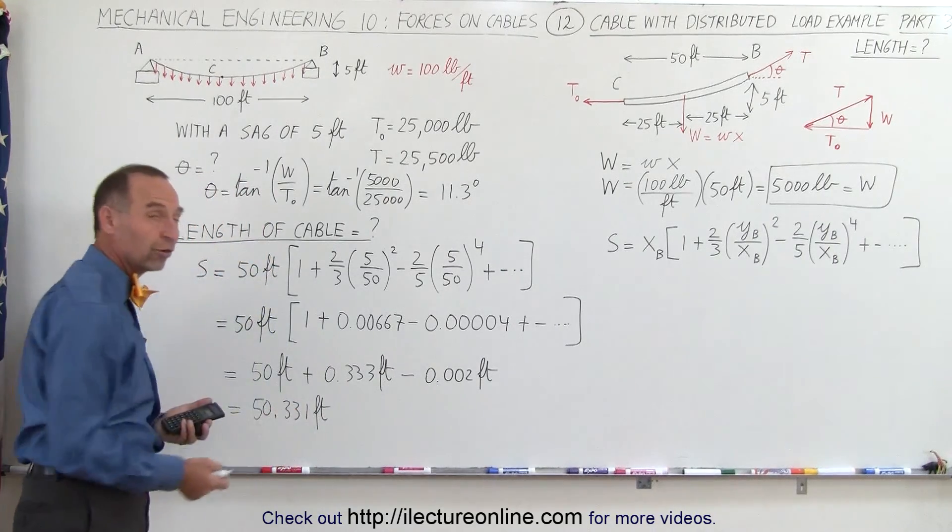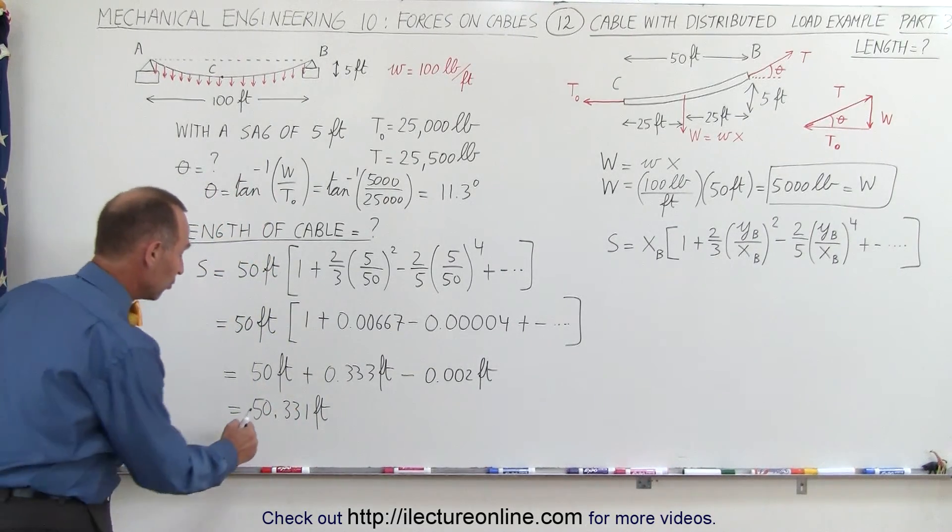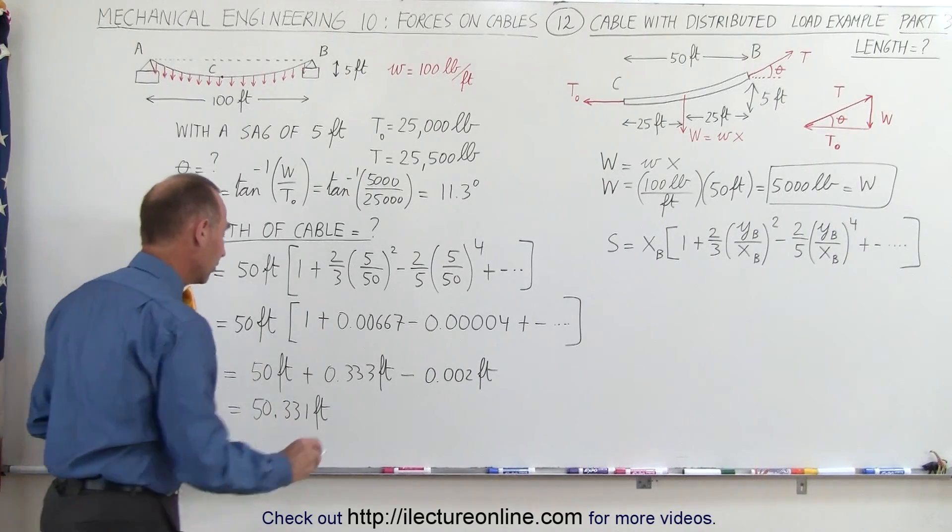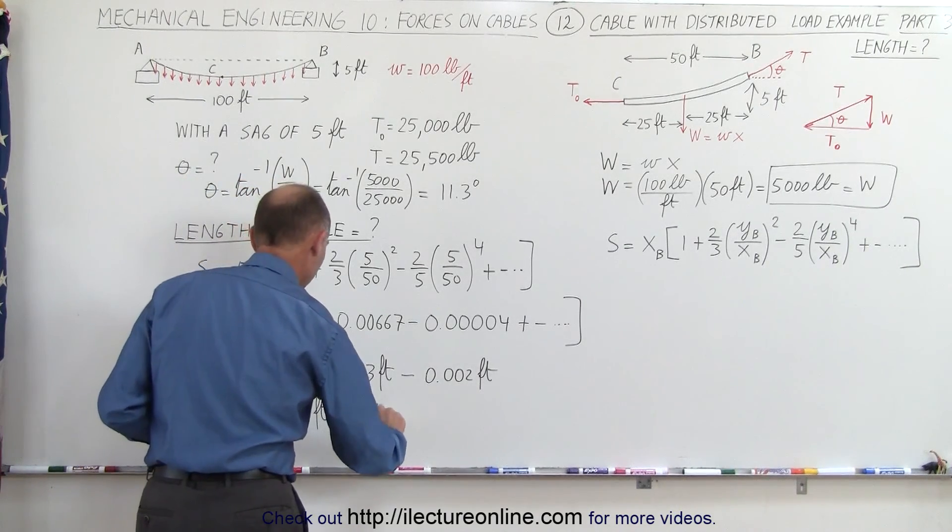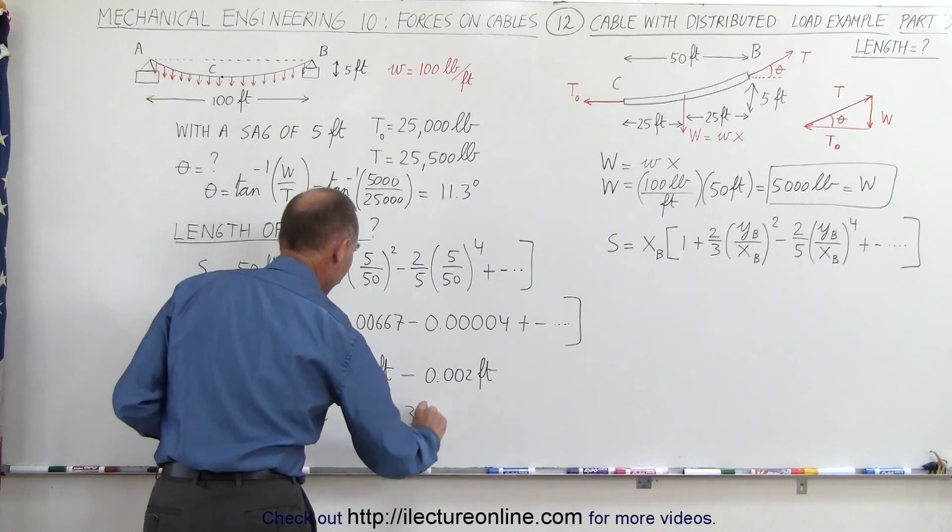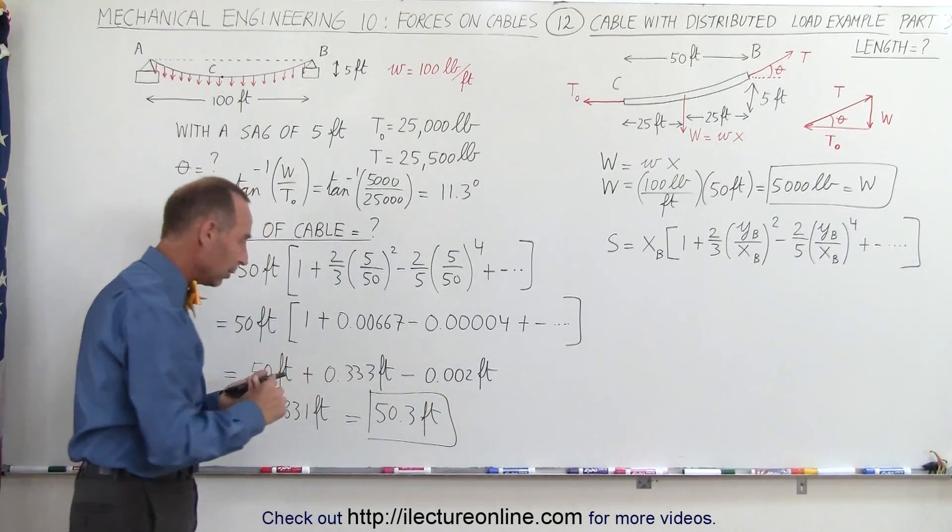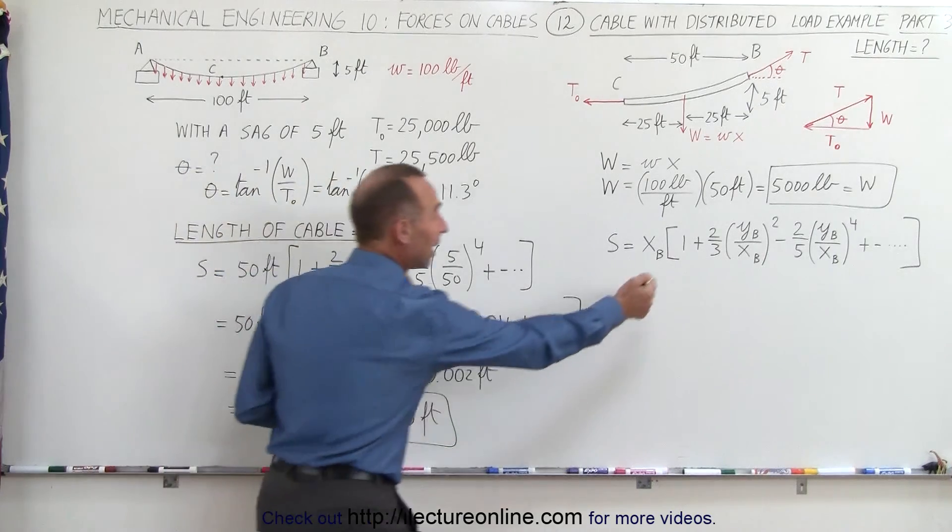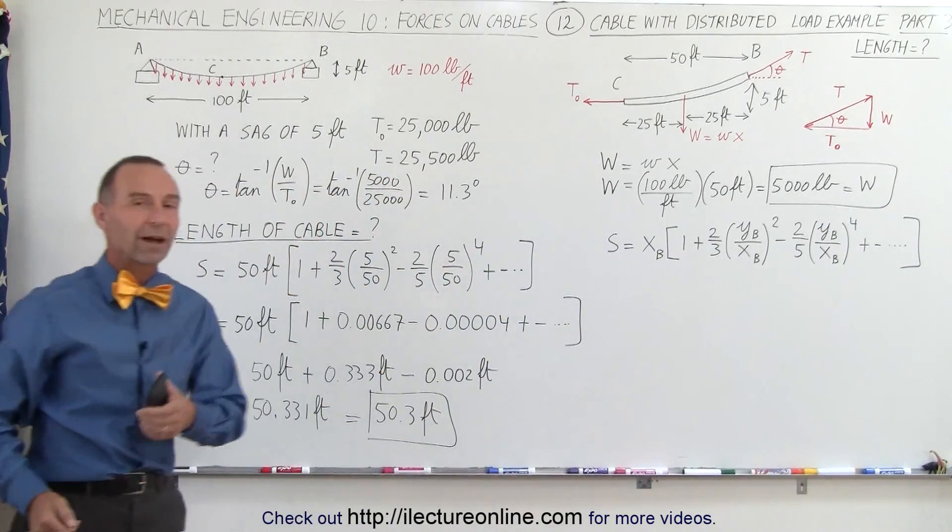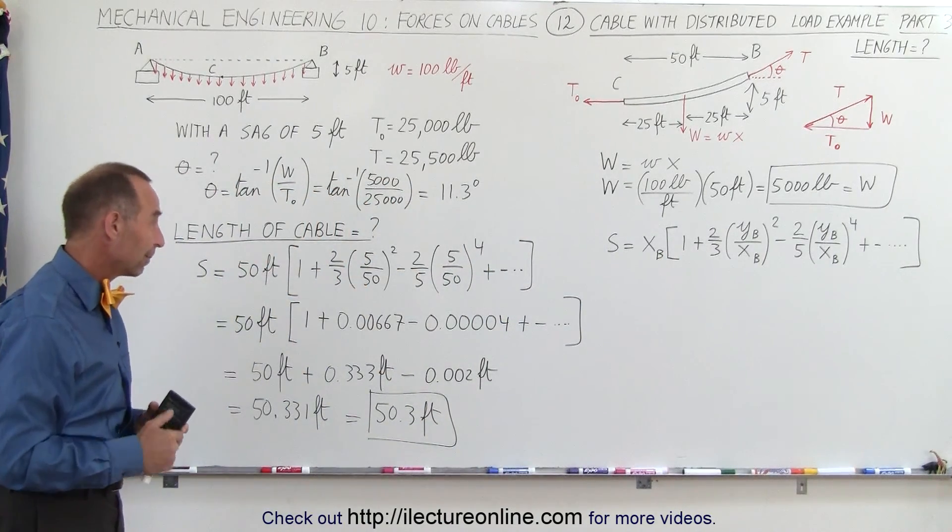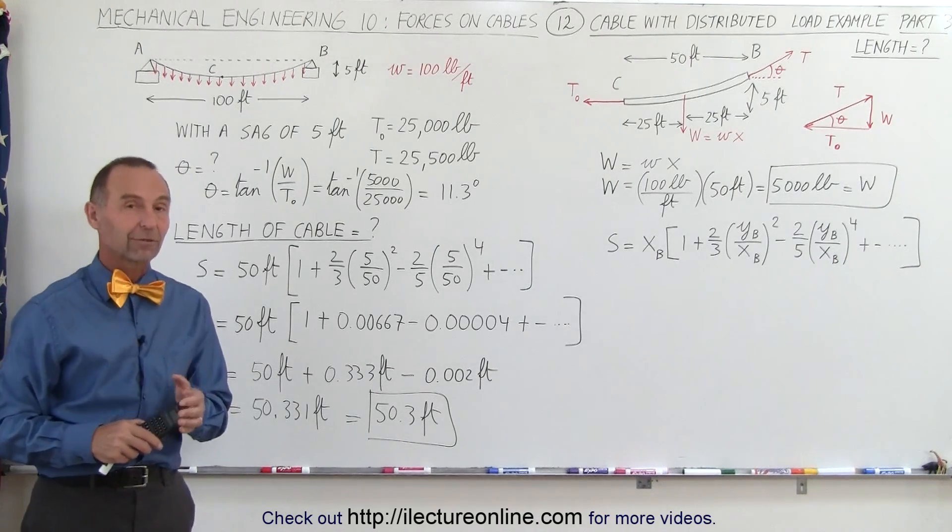But of course you don't want to keep all those decimal places. I think you maybe just want to round it off to one decimal place. So round it off to that, you get 50.3 feet. And this is how you calculate the length of the cable using this binomial expansion. That's an equation we derived in a video earlier in the series. And that's how we find the length of the cable.